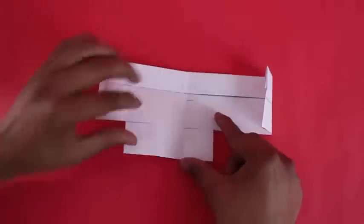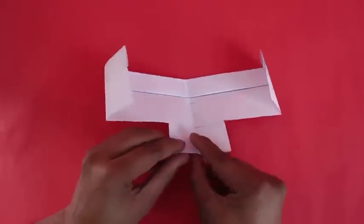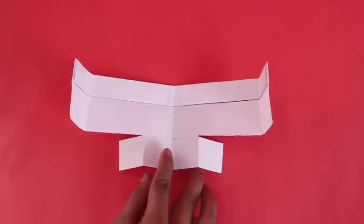Fold the main wings upwards and the tail wings downwards. Now the glider is ready.